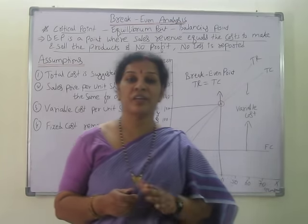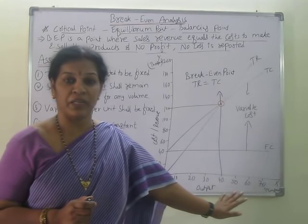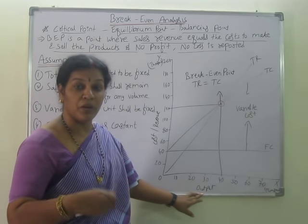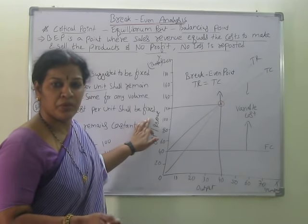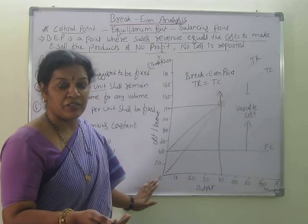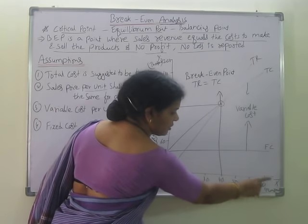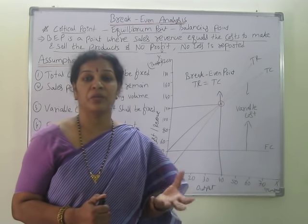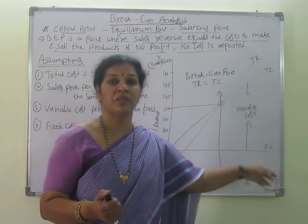Now I can show you breakeven analysis through a chart — it will be easier to understand. This is the graphical presentation of breakeven analysis. On the x-axis I am taking output — total output, how much is the output. On the y-axis I am taking cost or revenue — how much cost you have spent and how much revenue you have received. The output values are 10, 20, 30, 40, 50, 60, 70 — in thousands — so 10,000, 20,000, and so on. You can adjust according to requirement, in thousands, lakhs, or crores, but numbers must be kept small for easy calculation.